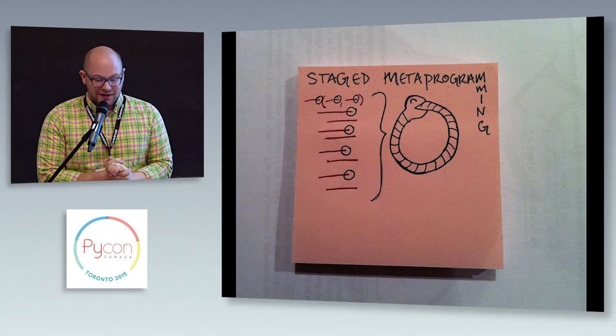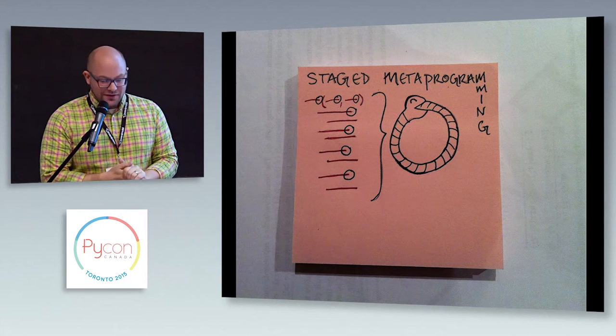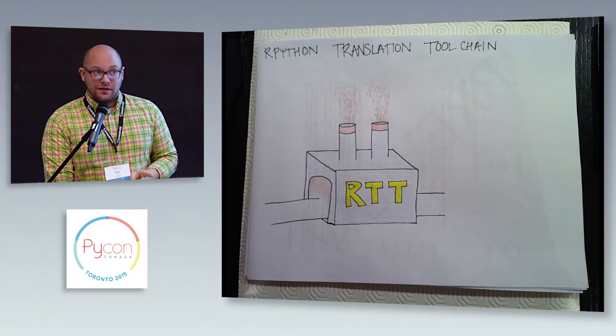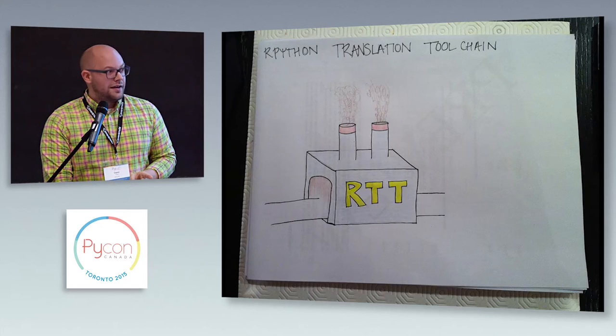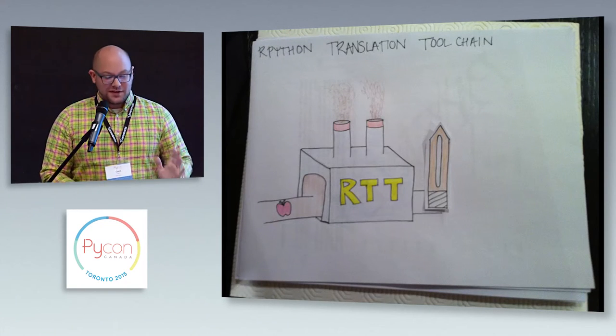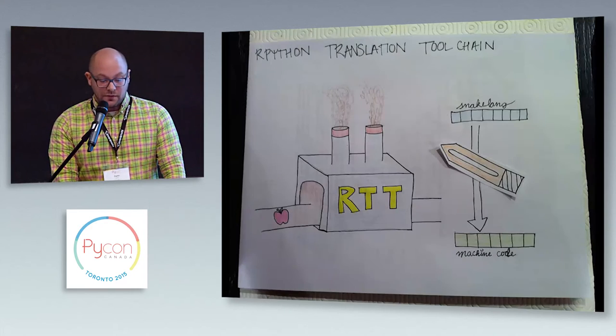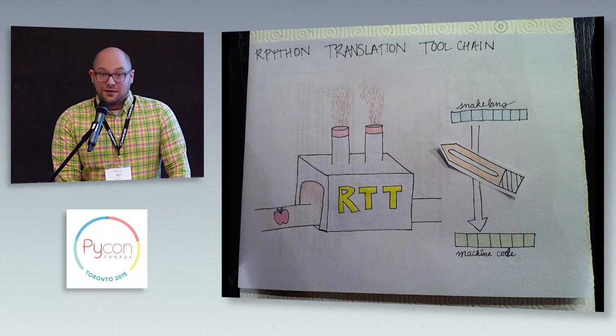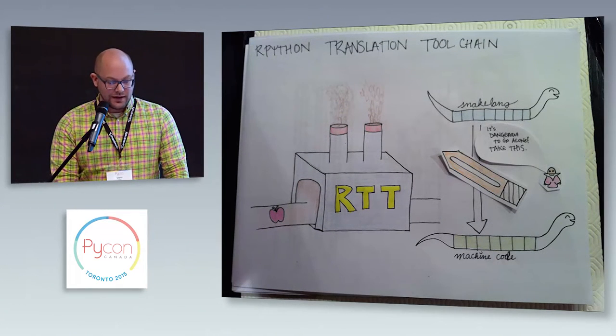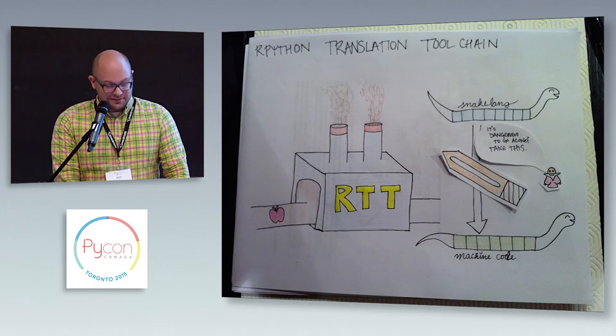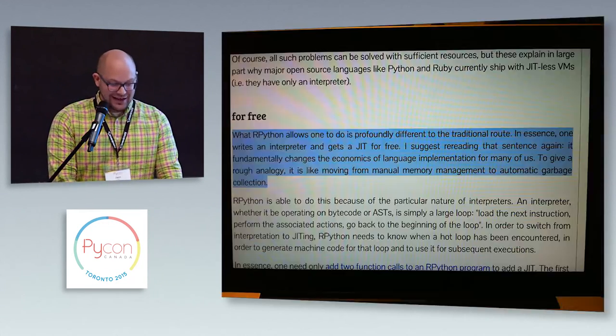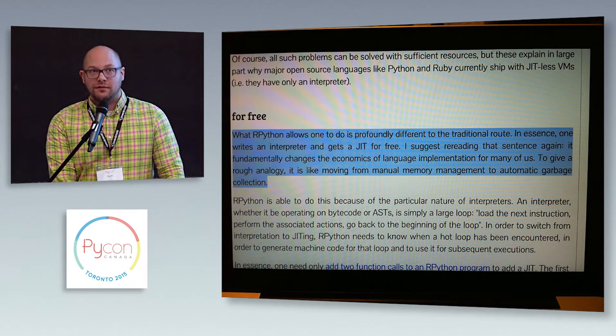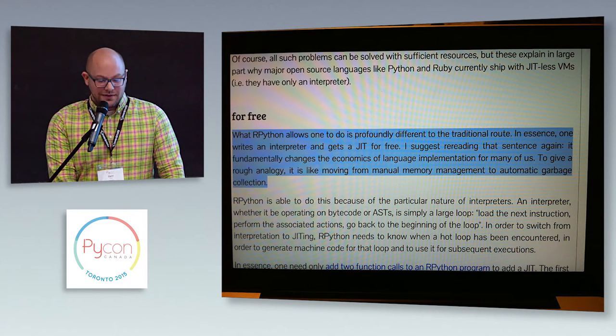Okay, so that brings us to the RPython translation tool chain, which is this really cool factory that we put our interpreter into, and it gives us back, do you know what it gives us back? Maybe you know already. It gives us back a compiler, in particular a just-in-time compiler that we can use to go from our language, in this case a snake language, to machine code. And this is really, really cool. And there's a little guy telling us how cool it is. One minute. All right. So there's this quote from Lawrence Trout where he says, this completely changes the dynamics of making a dynamic language, which is pretty awesome.